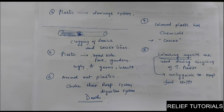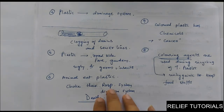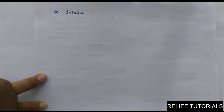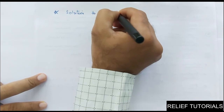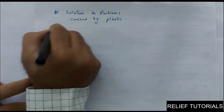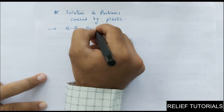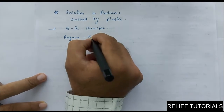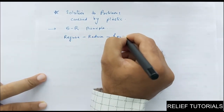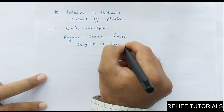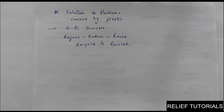These are some of the environmental and health hazards caused due to plastics. Now let us see solutions to the problems caused by plastic. We have the 5R principle: Refuse, Reduce, Reuse, Recycle, and Recover.